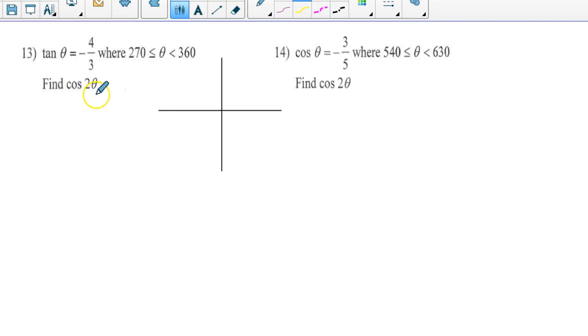Find the value of cosine 2 theta given tangent is negative 4 over 3 and the angle theta is between 270 and 360 degrees. That is, you are in the fourth quadrant.